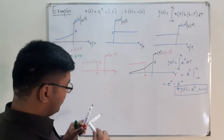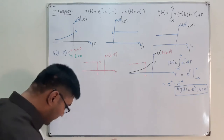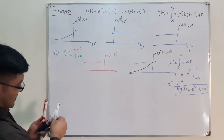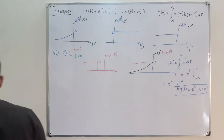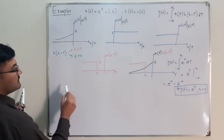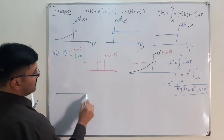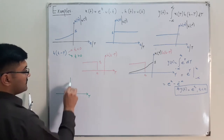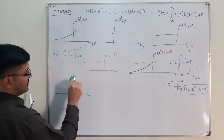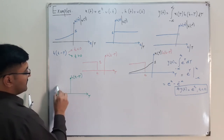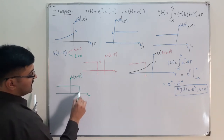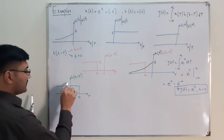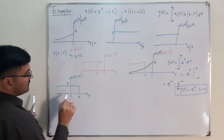Now the next case is for t ≥ 0. In this case, h(t - τ) starts at negative infinity and ends at some positive value of t on the τ axis. Now we again find the product of x(τ) and h(t - τ).